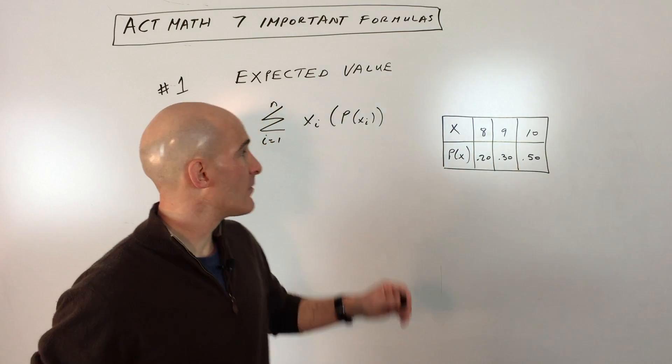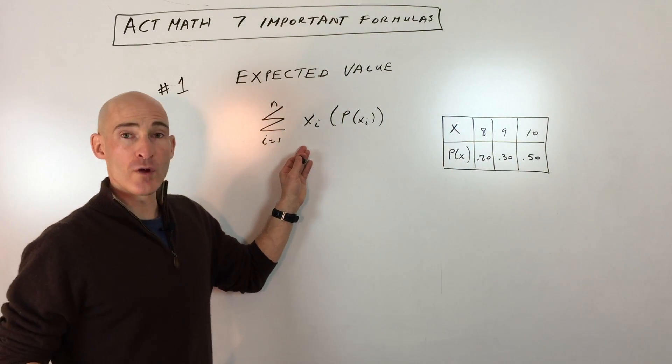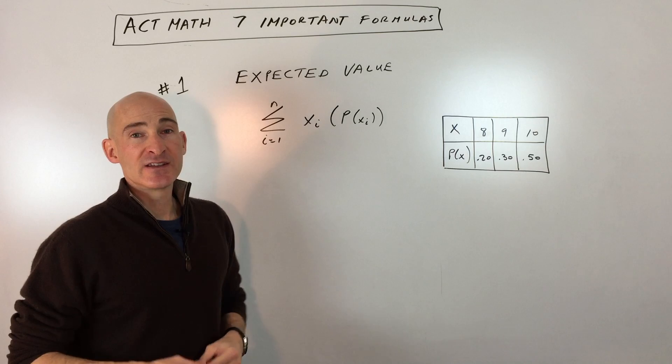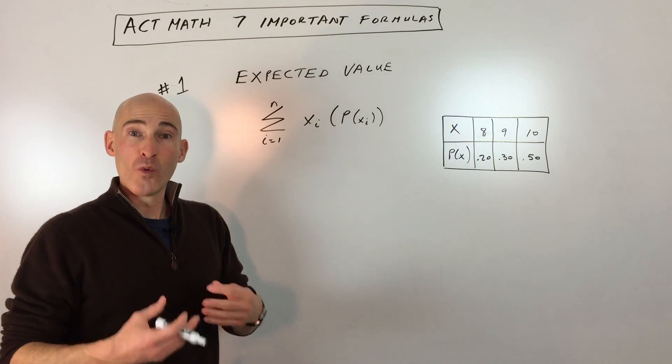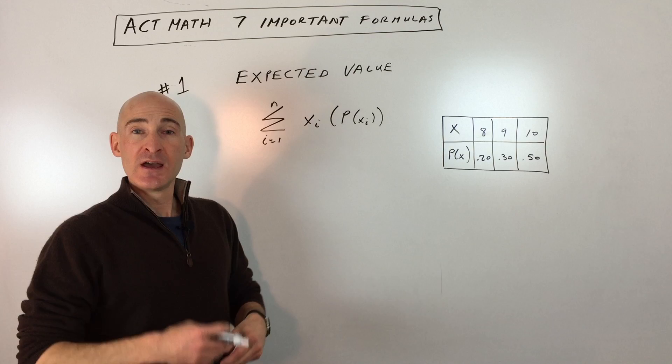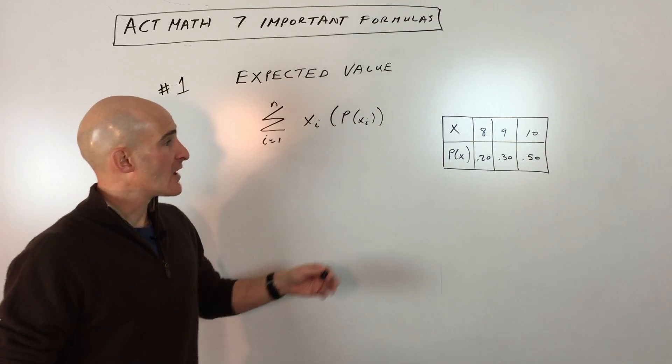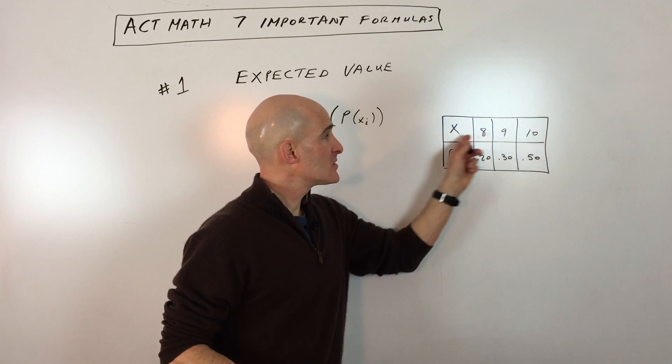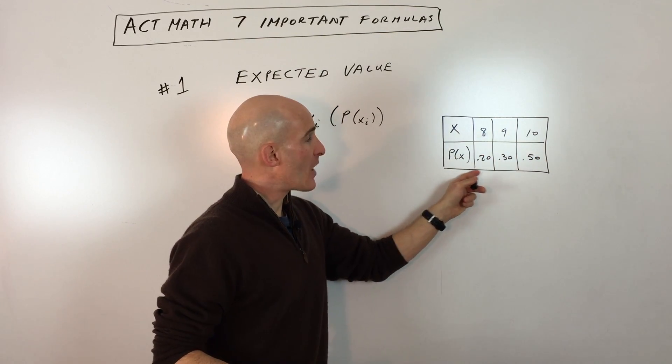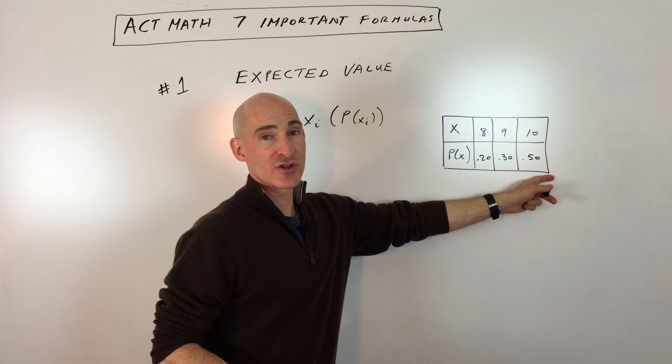But let's get into this video talking about the first formula, which is expected value. And essentially what expected value is, is what you would expect to get on average if you were to run a number of trials over and over again, given the outcomes, which are the X values here, and then the probability of those outcomes occurring.